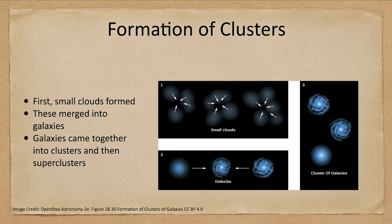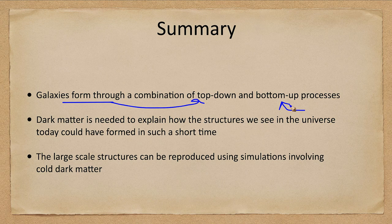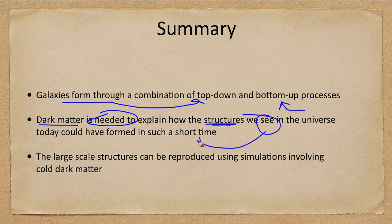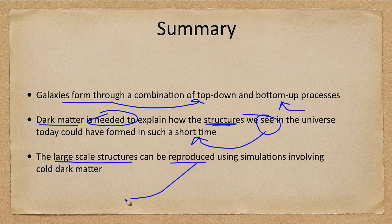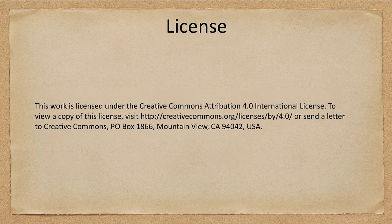To summarize: galaxies form through a combination of top-down and bottom-up processes. Dark matter is needed to explain how the structures we see in the universe today could have formed in such a short time. The large-scale structures can be reproduced using simulations that include very significant amounts of cold dark matter. That concludes this lecture on formation of structure in the universe. We'll be back next time for another topic in astronomy — have a great day everyone.